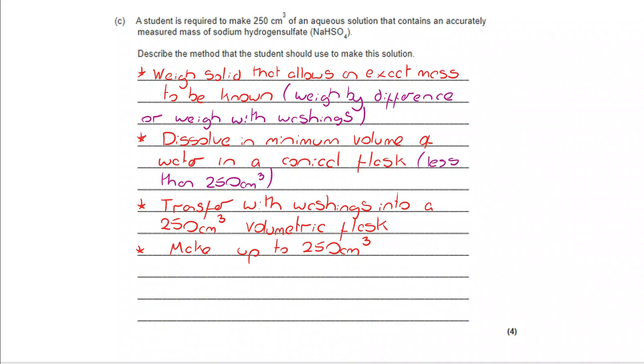We're then going to transfer washings into a 250 centimetres cubed volumetric flask and make it up to 250 centimetres cubed. The washings are really important. We want to make sure there's nothing left behind in the conical flask.